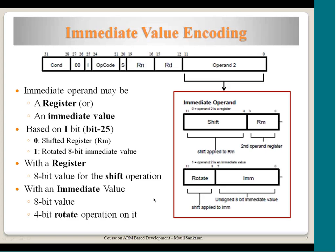Going deeper: when an operand comes from Rm, the barrel shifter performs some operation on the 32-bit register contents. The shift operation is interpreted in two different ways based on bit 4. If bit 4 is 0, the next two bits specify the type of operation: logical shift left, logical shift right, arithmetic shift right, or rotate right, and the 5-bit constant gives the shift amount — an unsigned integer from 0 to 31.